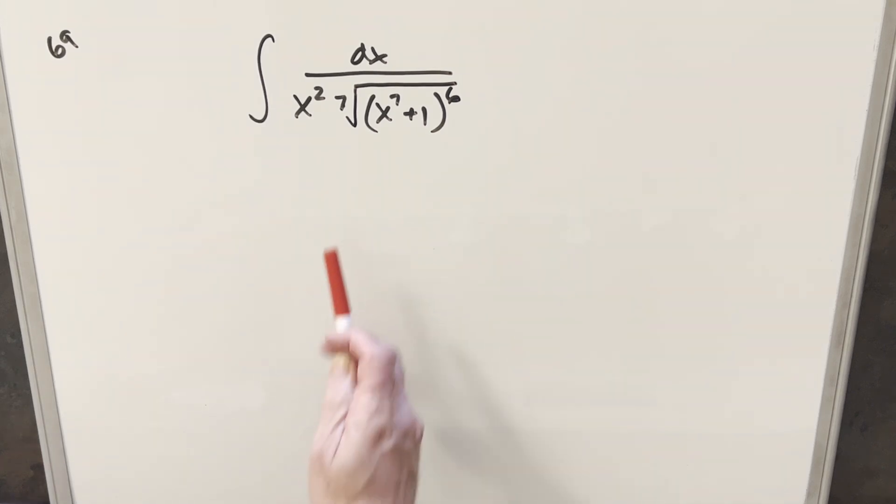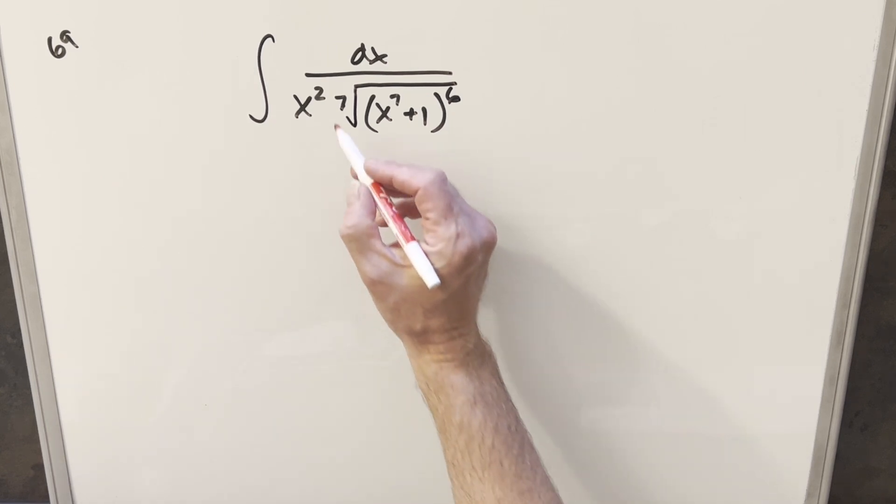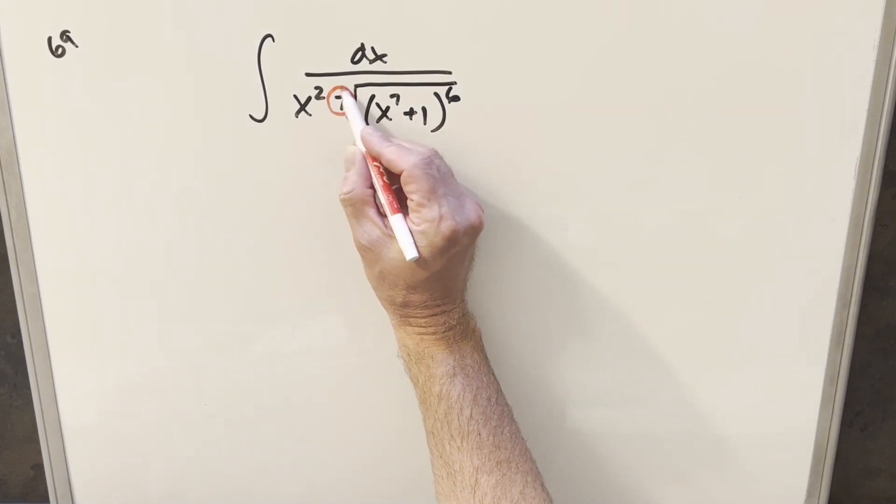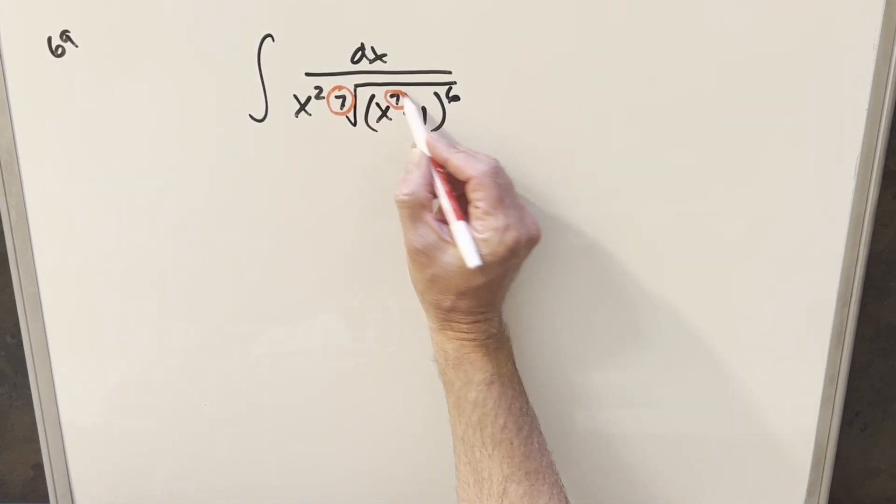Okay, it's kind of a scary looking expression just having the 7th root, but the thing I want to notice and what I want to make use of is we've got the 7th root, but we also have this 7th power inside here.